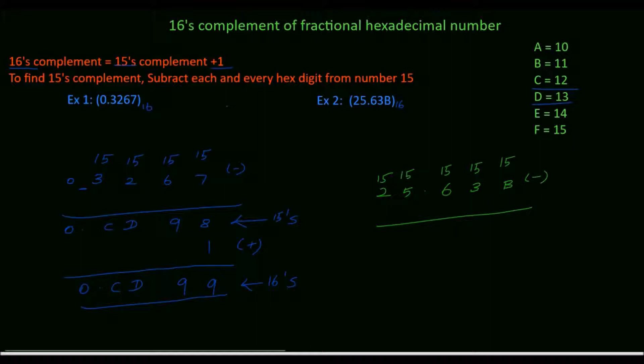B is equivalent of 11, so 15 minus 11 which is 4. 15 minus 3 is 12. 12 is equivalent of C. 15 minus 6 which is equal to 9.